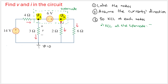KCL states that the sum of currents going in equals the sum of currents going out. There is only one current going in. We know this node is 14 volts from ground, so using Ohm's law, that incoming current is (14 − v1) divided by 4.